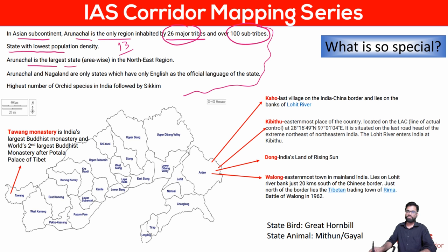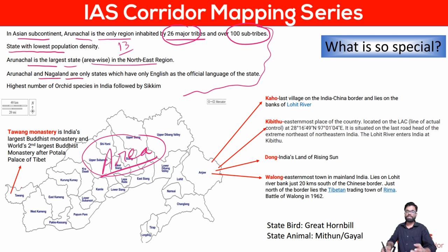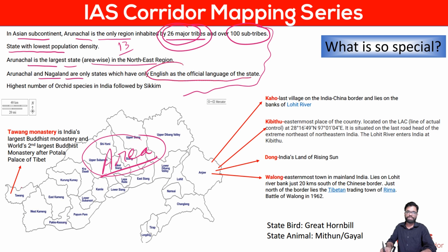Arunachal Pradesh is the largest state of Northeast India by area; the second largest is Assam. Arunachal Pradesh and Nagaland are the only states that have English as their only official language. The trick is: there are 26 major tribes, so everyone would want their language to be official. To avoid conflict, they chose English as the only official language. The literacy rate is very high. This also happens in Nagaland.